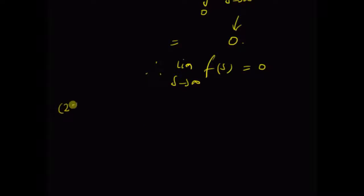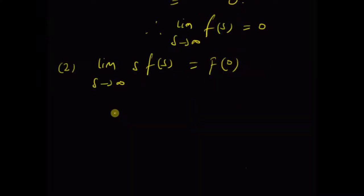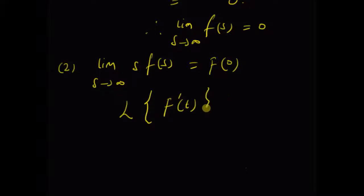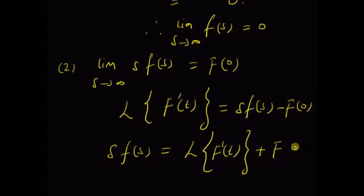Let us look at the second one: limit as s tends to infinity of s times F(s) is equal to f(0), that is the initial value of the function f(t). From the definition of the Laplace transform of the derivative, the Laplace transform of f'(t) equals s·F(s) minus the initial value f(0). Rearranging, s·F(s) equals the Laplace transform of f'(t) plus f(0).